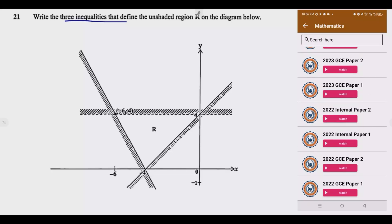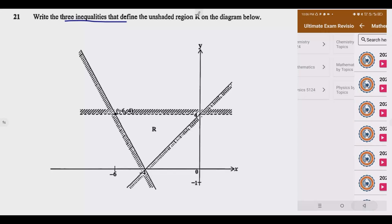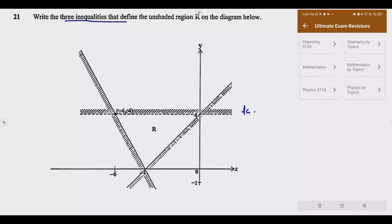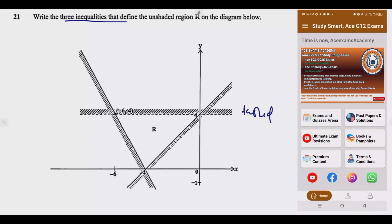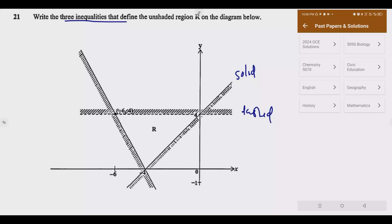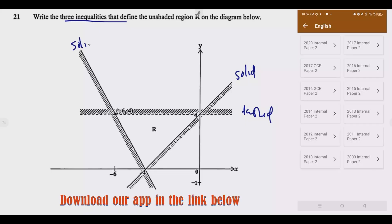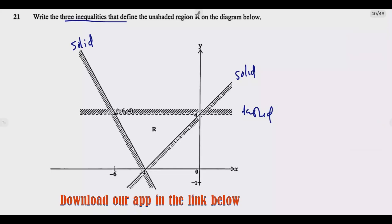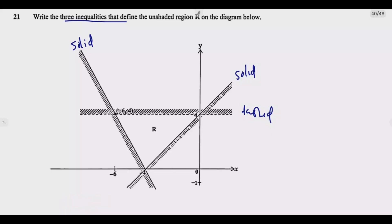You notice that this one is dashed, this one is solid, and this one is solid. For solid lines we use greater than or equal to, or less than or equal to. For dashed lines it is strictly greater than or less than — that's the sign we need to use.